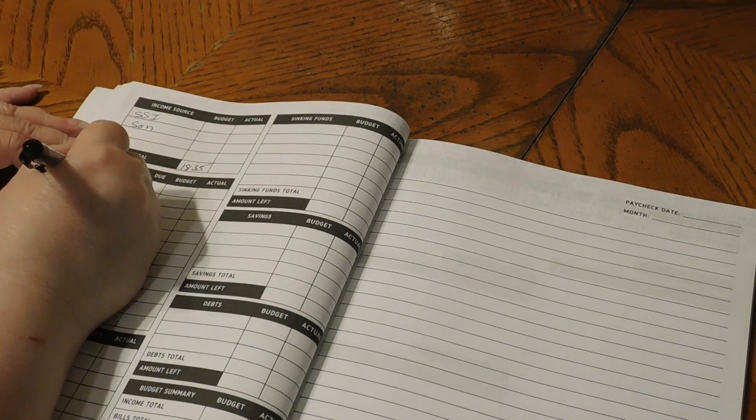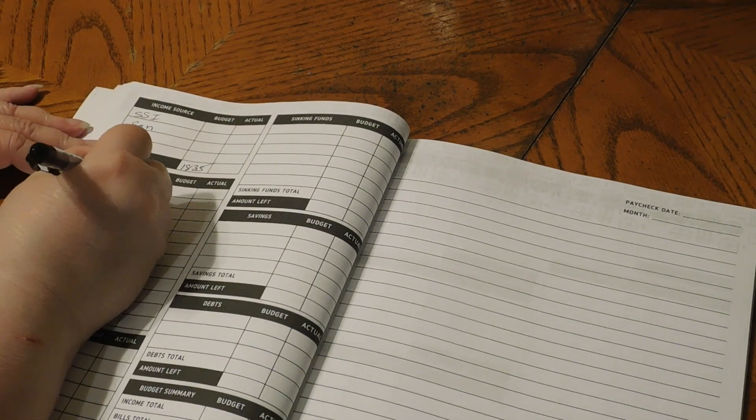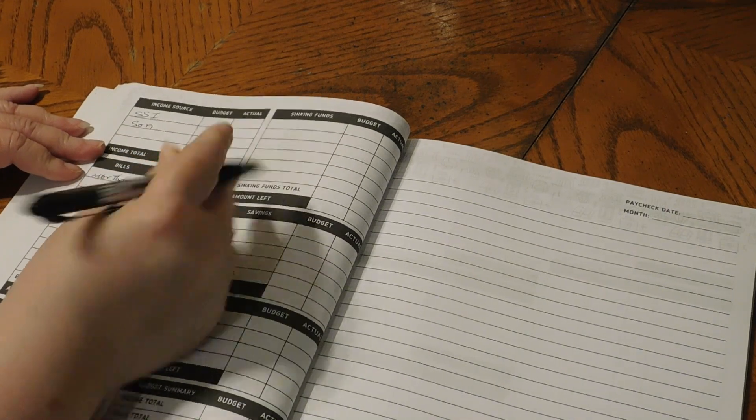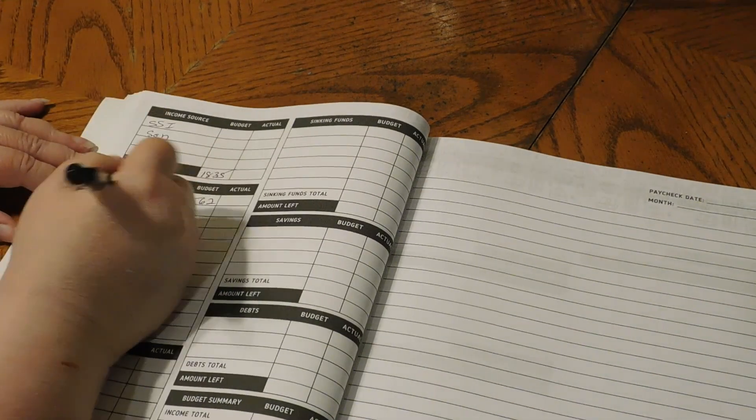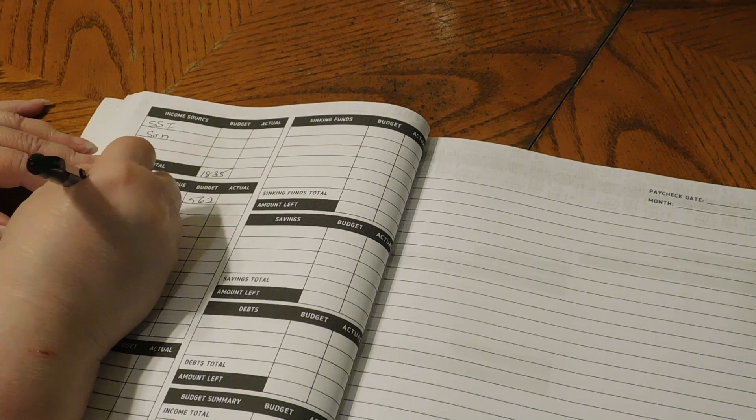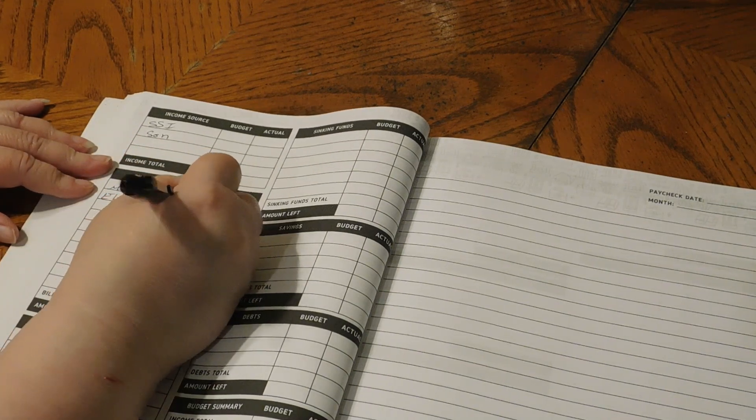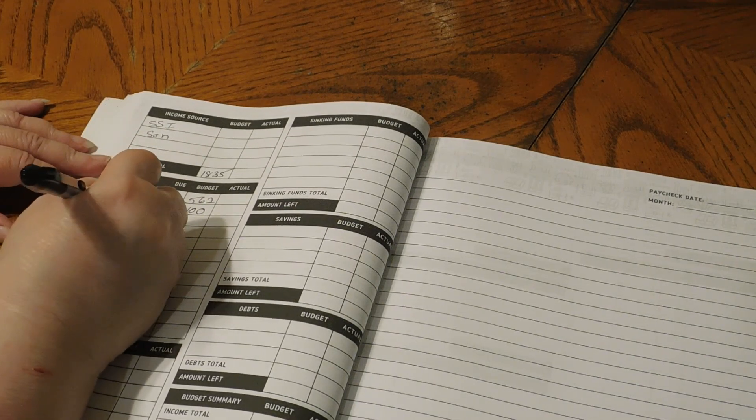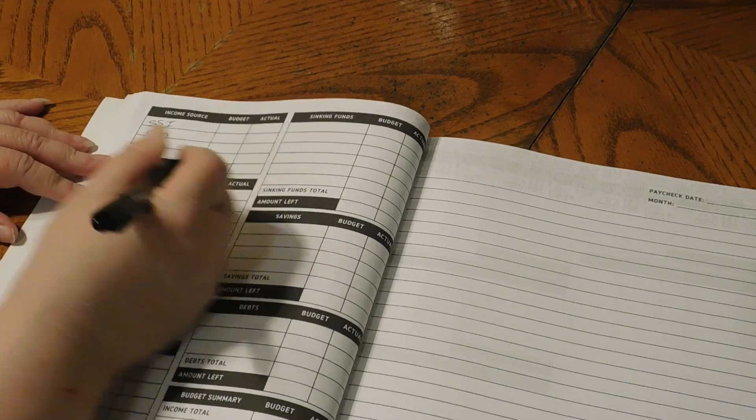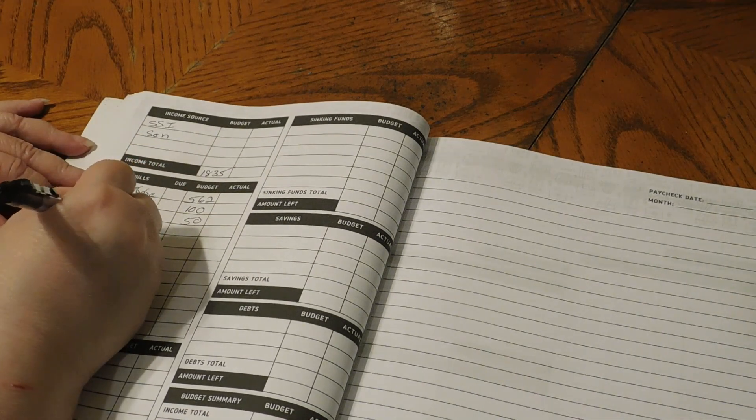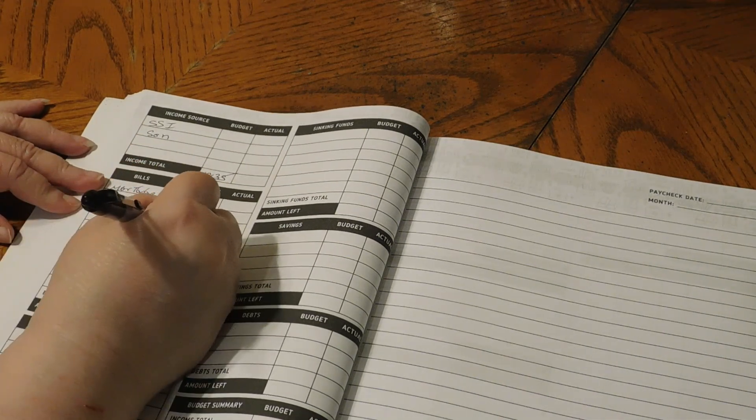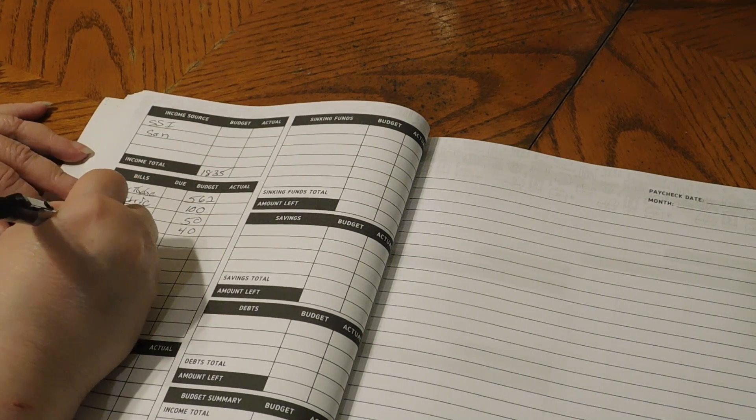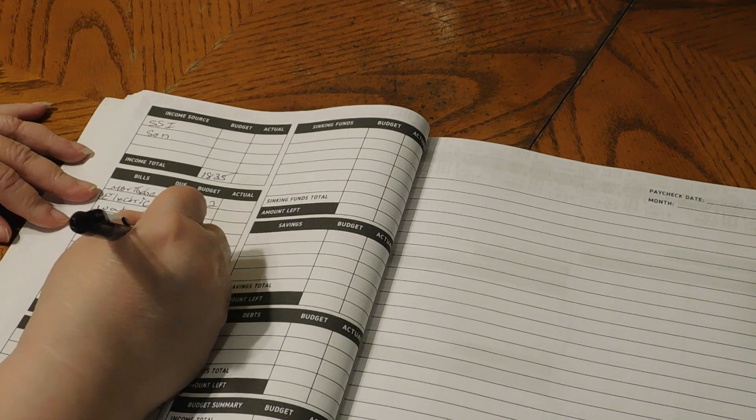We have our mortgage, that is $562. We have our electric, which is $100. We have our water, $50. Cable, $40. Food, which is $300.